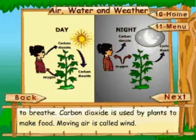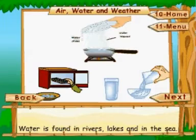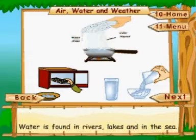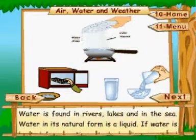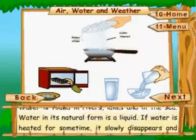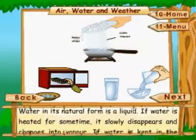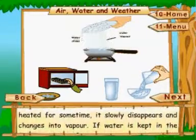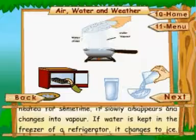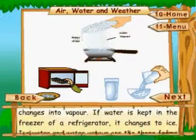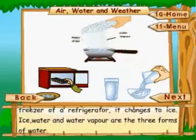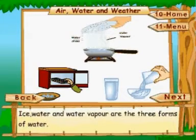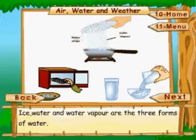Moving air is called wind. Water is found in rivers, lakes, and in the sea. Water in its natural form is a liquid. If water is heated for some time, it slowly disappears and changes into vapor. If water is kept in the freezer of a refrigerator, it changes to ice.